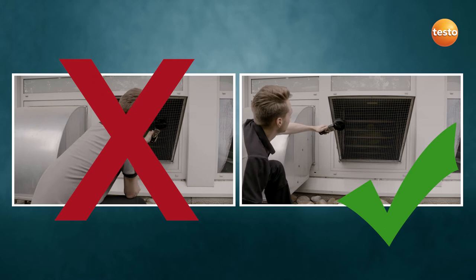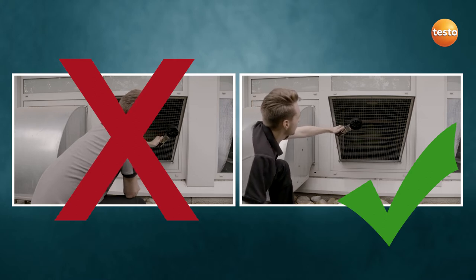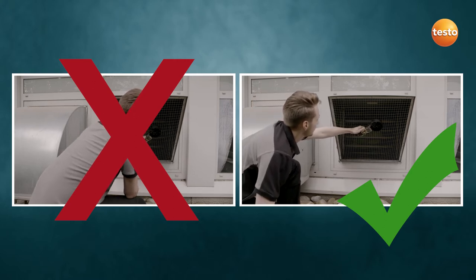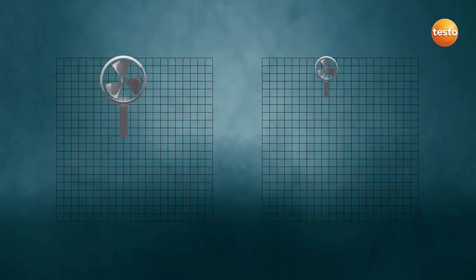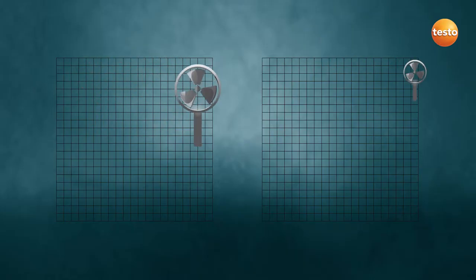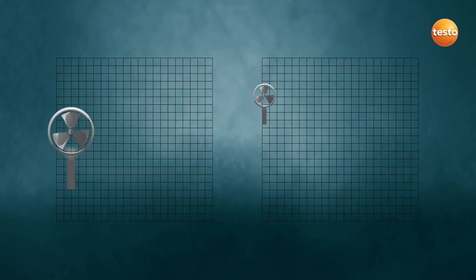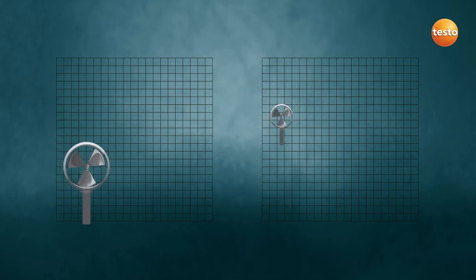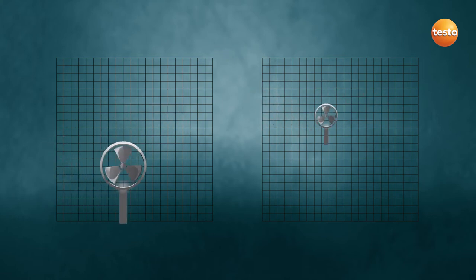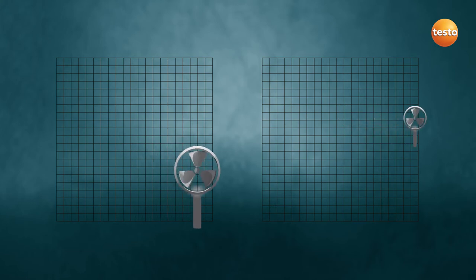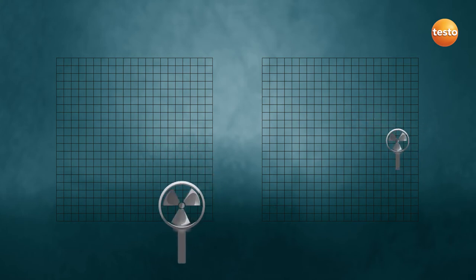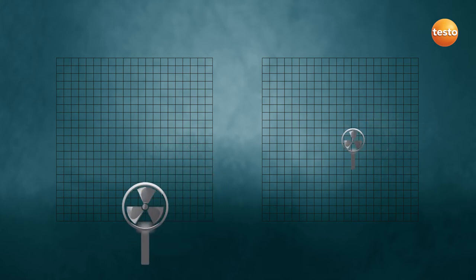The best method is to move the vane across the grill surface at a distance of 5 cm. Vanes with 100 mm diameter are better suited to measuring than instruments with smaller vanes, as the flow values are integrated and averaged over a larger area. Integrating the same area with a smaller vane takes significantly longer.